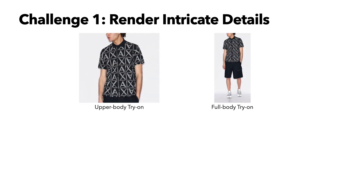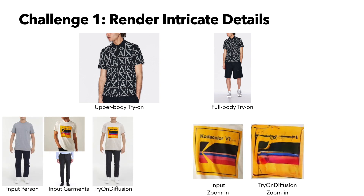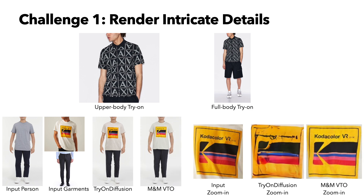Compared to our previous paper Tryon Diffusion, which focuses on the upper-body try-on, Mix and Match VTO aims to tackle the full-body try-on task. As we can see, the garment occupies a much smaller area in the full-body try-on compared to the upper-body one. Thus, it requires the model to render more intricate garment details like very small logos and texts. If we directly apply Tryon Diffusion to the full-body try-on, we can see that all those small texts and logos are missing or destroyed. Mix and Match VTO can correctly warp and synthesize the details.